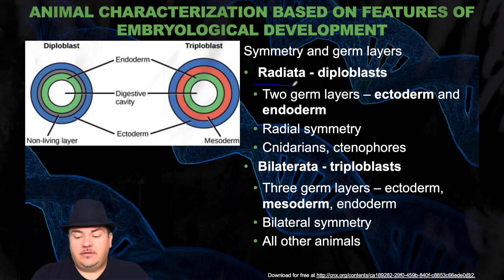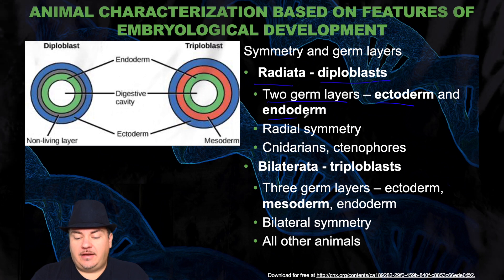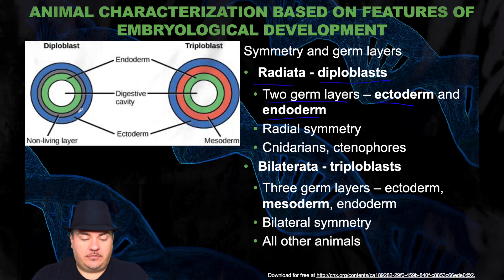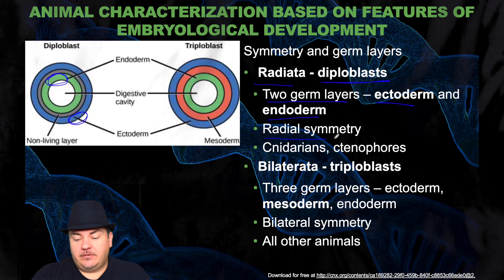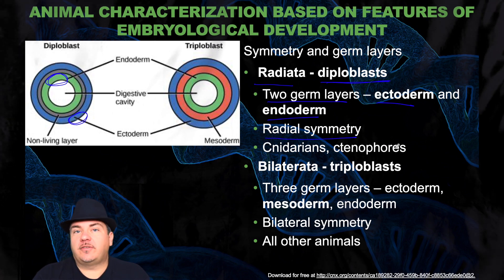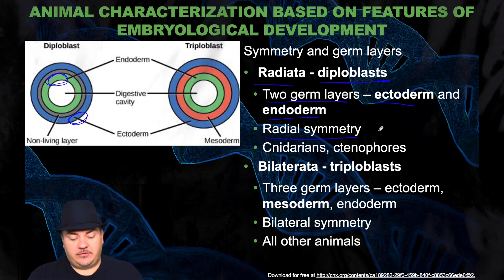The Radiata are the diploblasts, which means they have two germ layers — the ectoderm and the endoderm. The ectoderm is the outer layer, shown here in blue. The endoderm is the inner layer, shown here in green. These diploblasts have radial symmetry. Examples of these organisms are cnidarians or ctenophores — for example, jellyfish is a common organism that would be a diploblast.